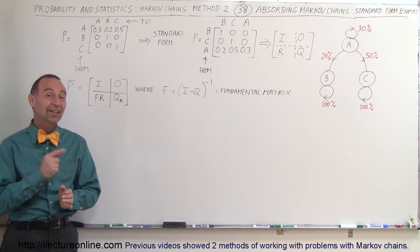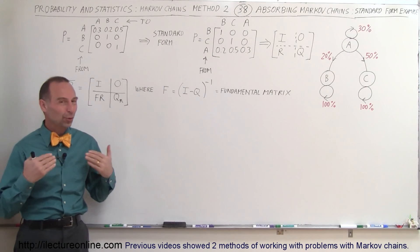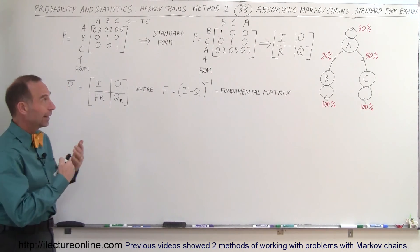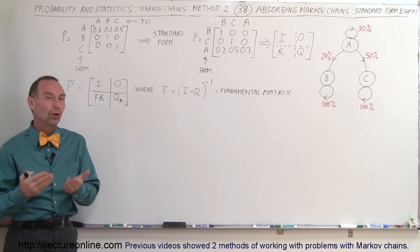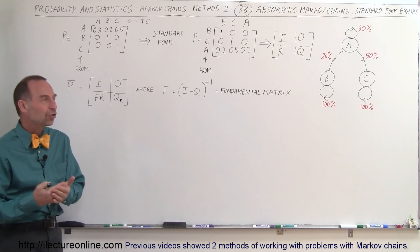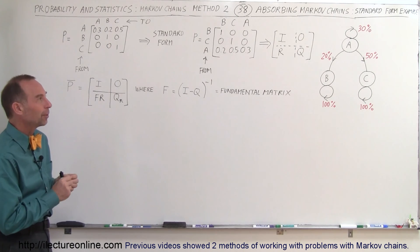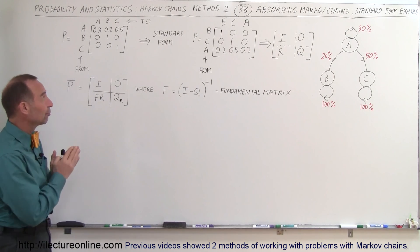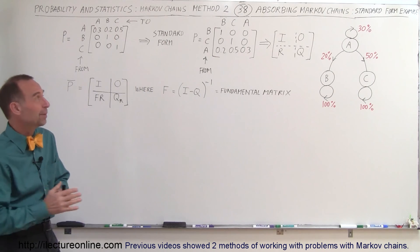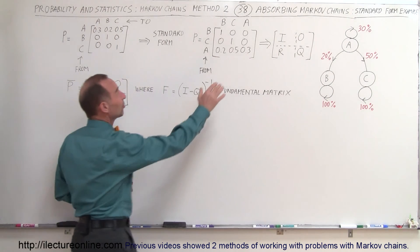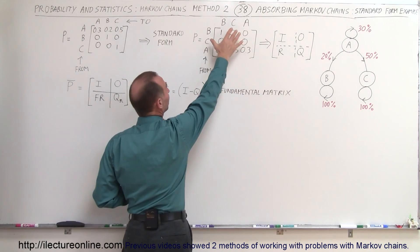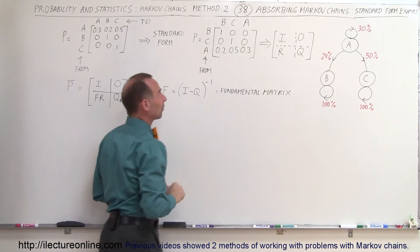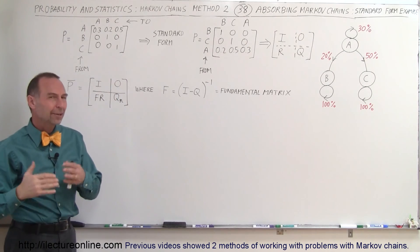Welcome to ElectronLine. In this video we're going to show you one more example of how to execute an absorbing Markov chain type of problem. In this case we have the standard form, which means that the ones and zeros are in the upper portion of the matrix and all the numbers are in the lower portion of the matrix.